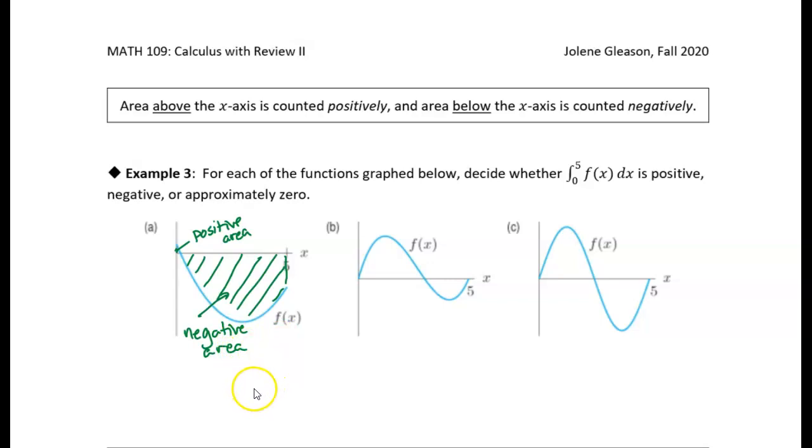Okay, so the integral from zero to five is going to be negative, right? Because there's just a tiny bit of positive area and way more negative area. So this integral from zero to five of f(x) dx is negative.